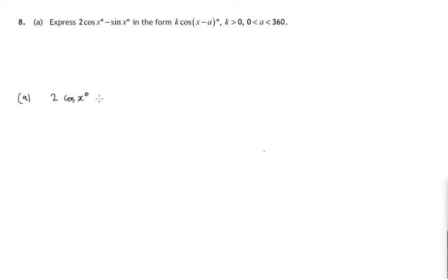So we're wanting 2 cos x minus sin x to equal k cos(x minus a). Now there's not a lot we can do with the left hand side, except note that that's negative 1 multiplying the sin x. But the right hand side we certainly can do something with. We can expand.